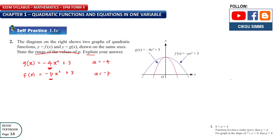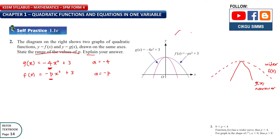Looking at the graphs, g(x) is the narrower one and f(x) is the wider one. Both graphs have a downward-opening shape, which means the value of a must be less than 0 — a must be a negative number.